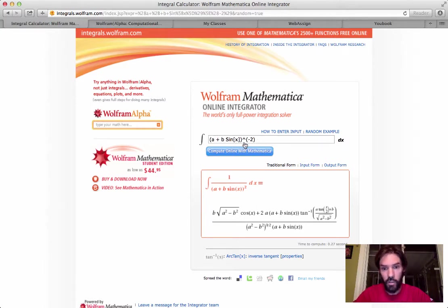So here you can enter whatever function you'd like and you click on Compute Online with Mathematica, for example, the integral of a plus b sine of x, the whole thing to the power of minus 2, will be calculated and then you get a big mess.